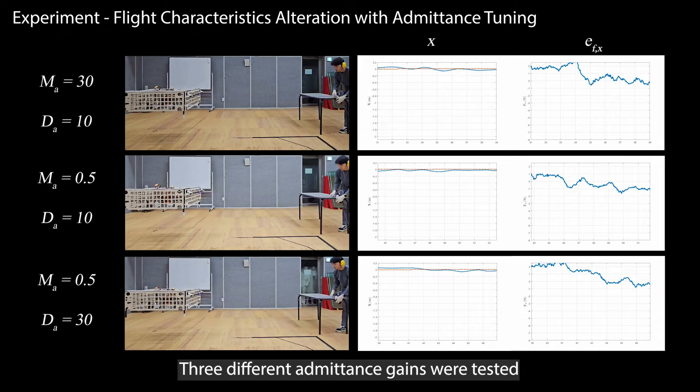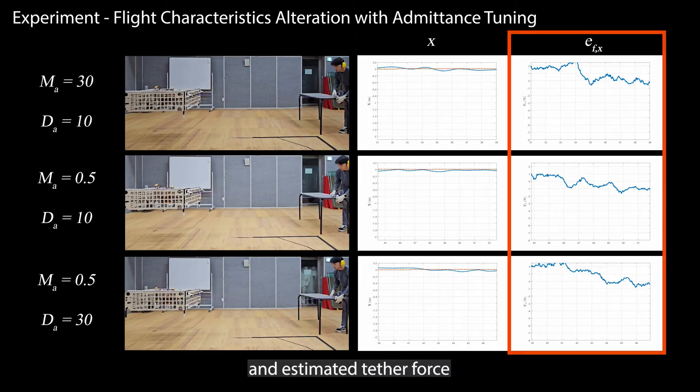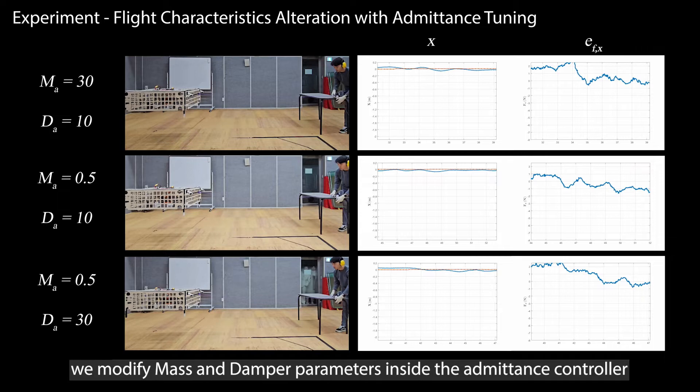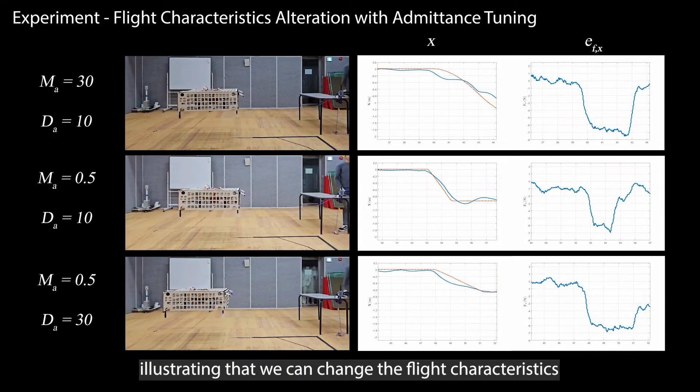Three different admittance gains were tested. The graphs on the right show the desired and actual trajectory and estimated tether force. This experiment is designed to showcase how the drone's behavior can change as we modify mass and damper parameters inside the admittance controller.